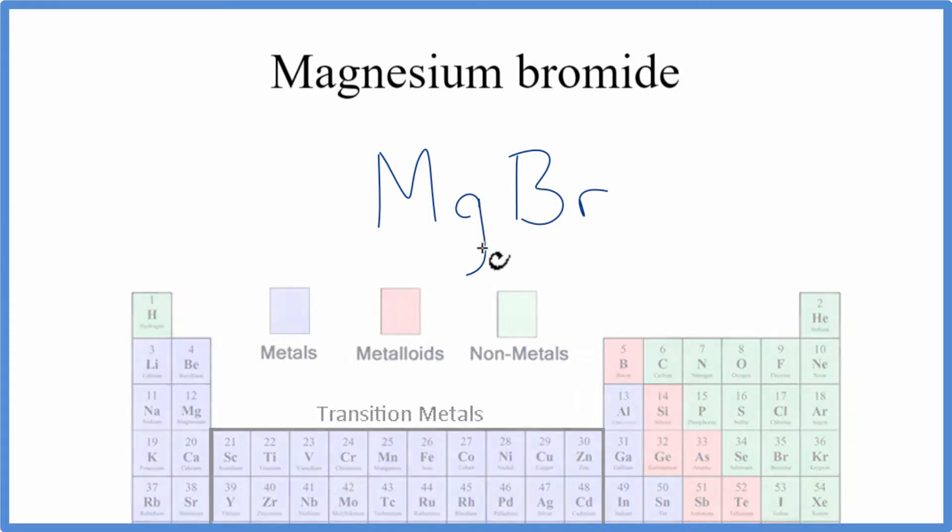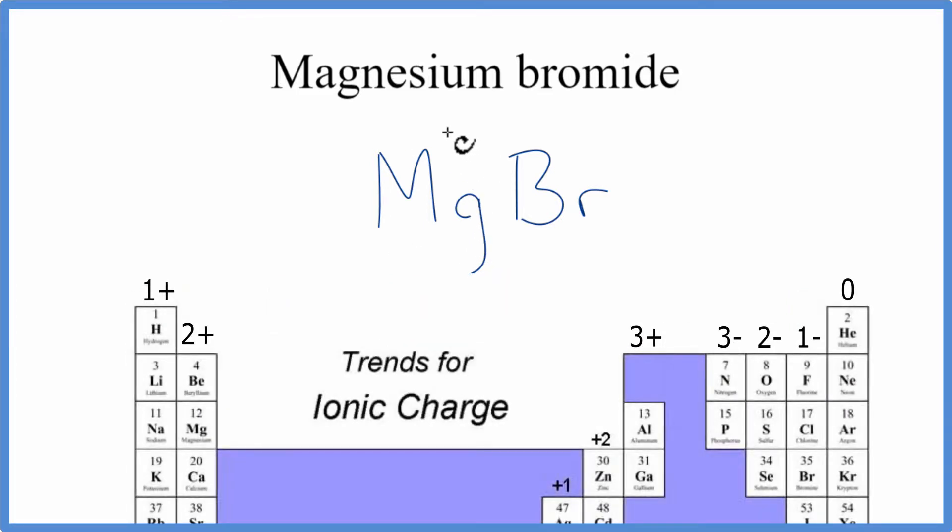So we go back to the periodic table, we see that magnesium has a 2 plus charge, and the bromine has a 1 minus.